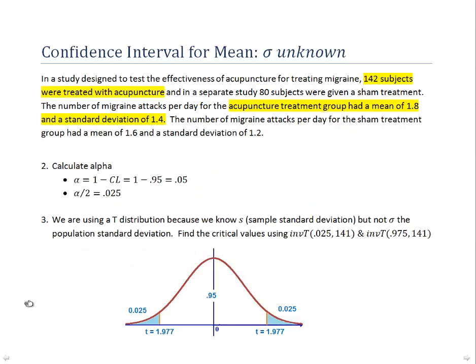The next step is to calculate alpha. Alpha is 1 minus the confidence level, so that's 0.05, and we'll need alpha over 2, or 0.025. When we set up our confidence interval for a 95% confidence level, we put 0.95 probability in the middle of the distribution, and we put alpha over 2 — 0.025 — in each tail. Our task becomes finding the T values that correspond to 0.025 area to the left, or 0.025 area to the right.